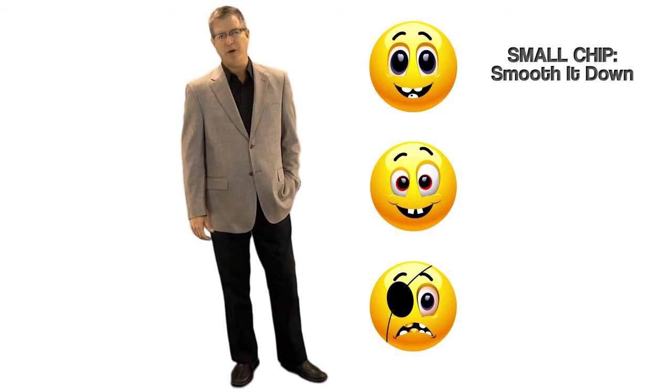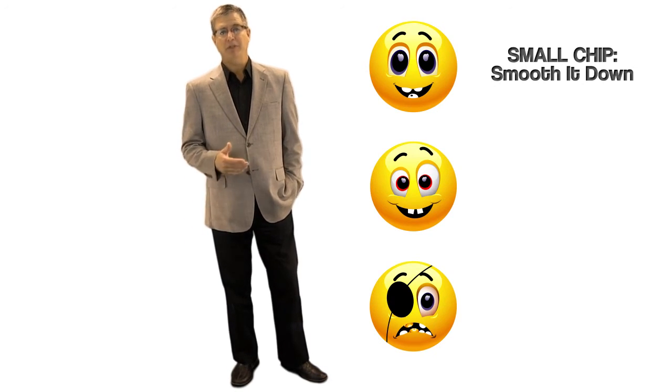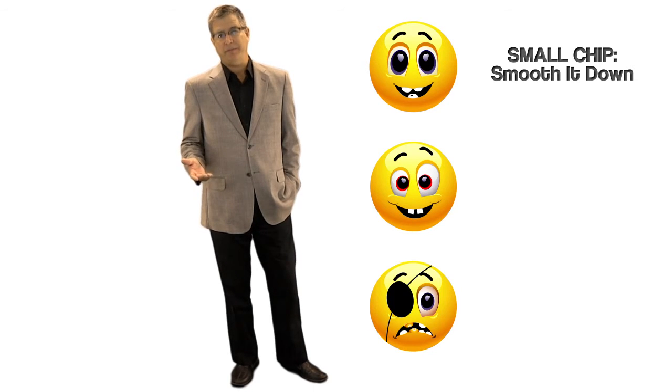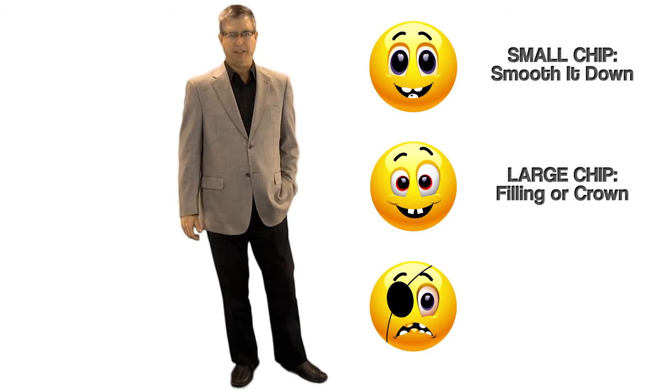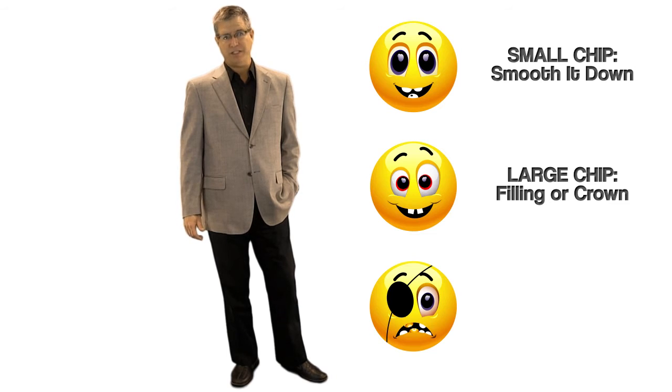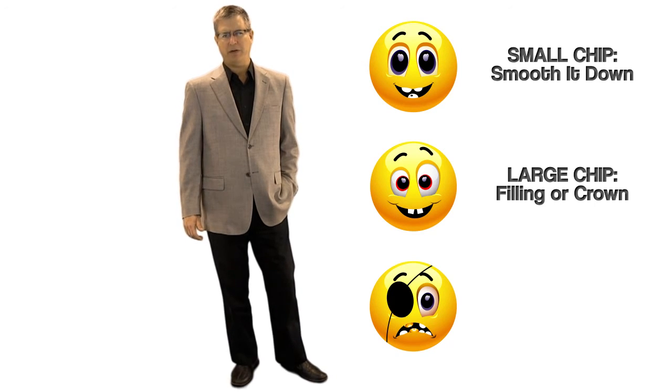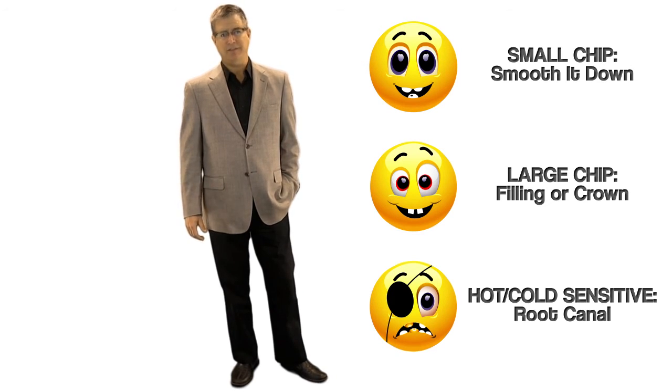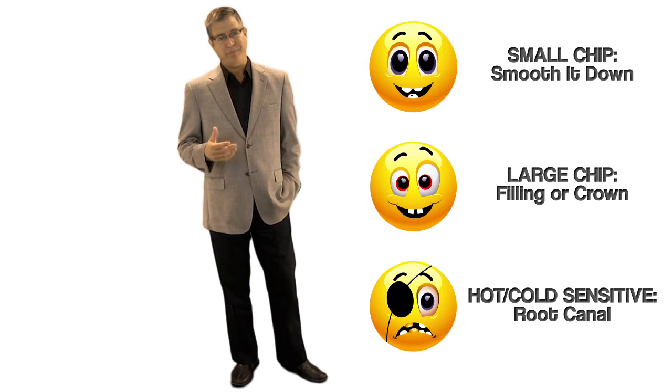If you just have a small chip or a broken edge, most of the time we can simply smooth it down. If it's a larger chip, a filling might be necessary. If a large part of the tooth is missing, it most likely will require a crown. And in some cases, if it's sensitive to hot and cold, it might need a root canal.